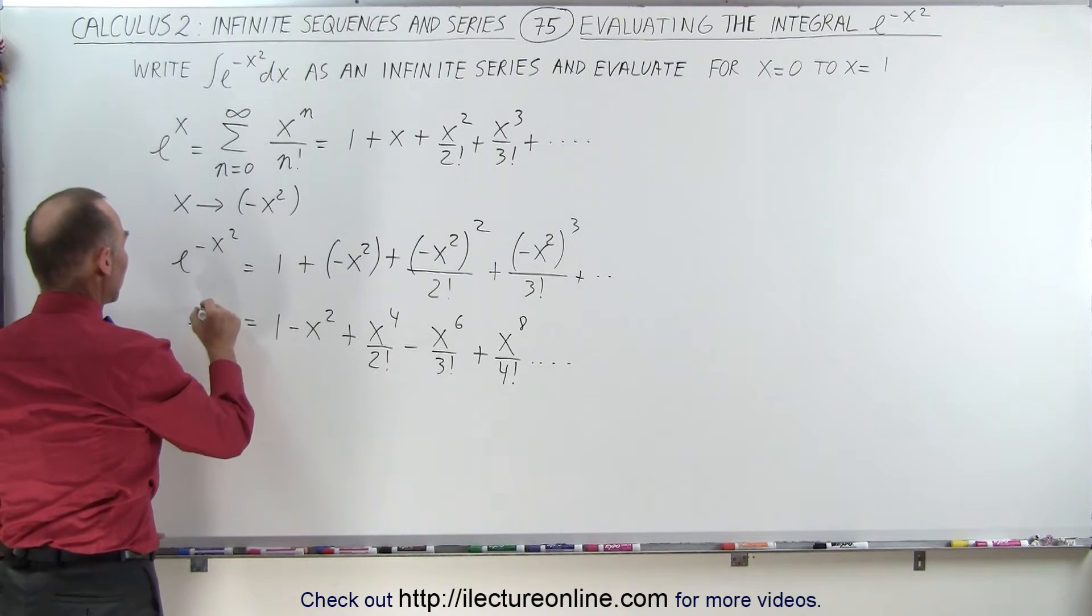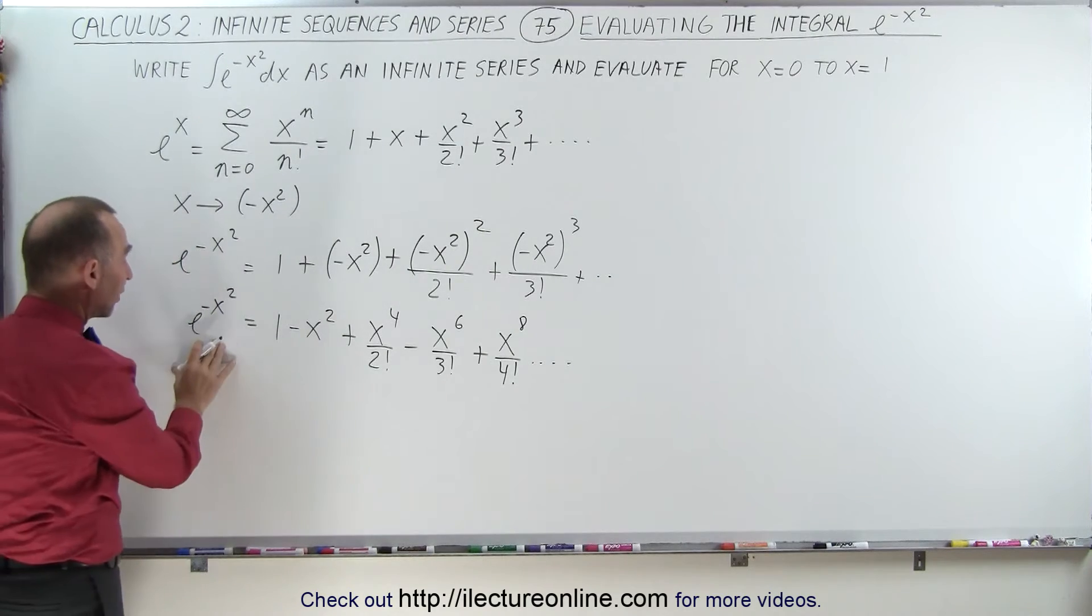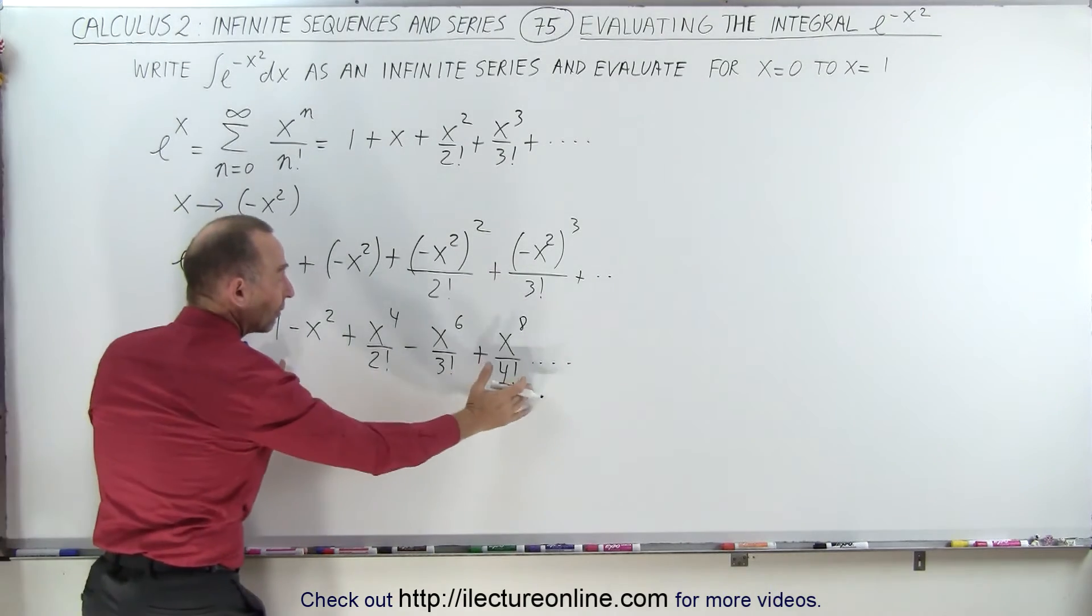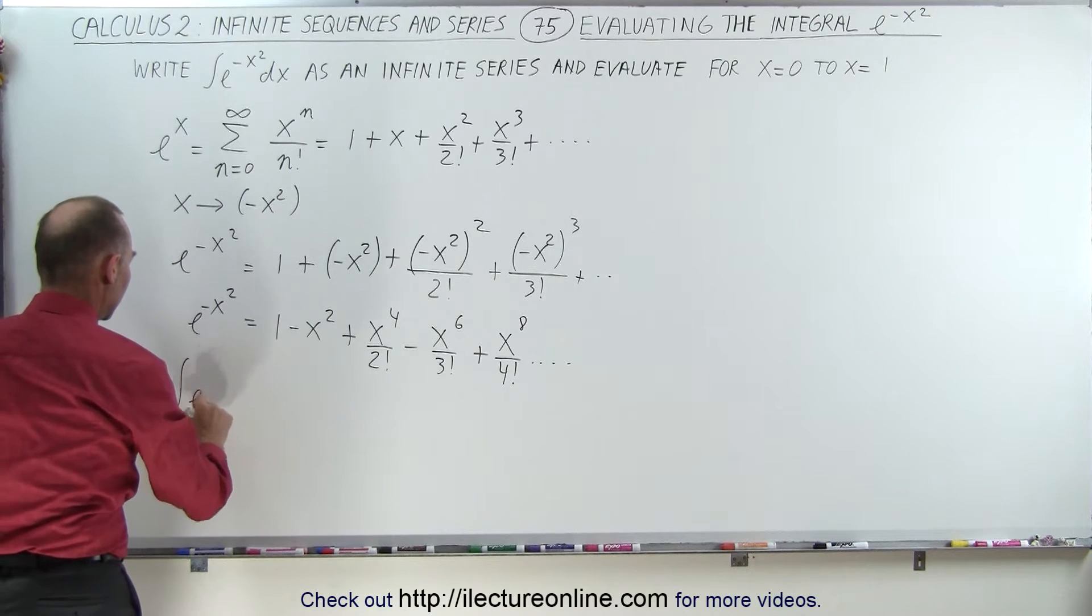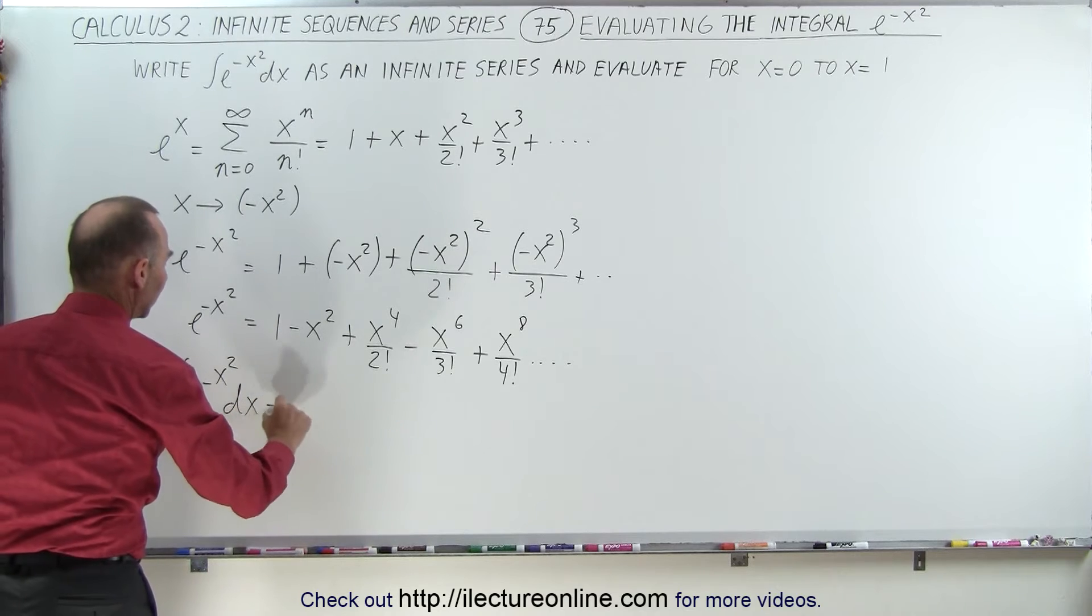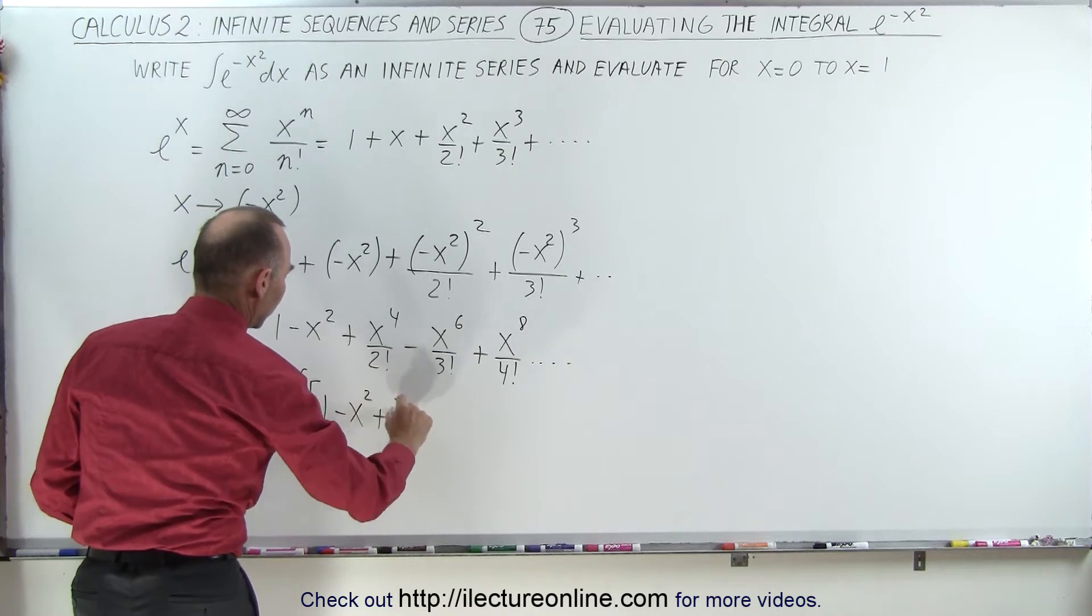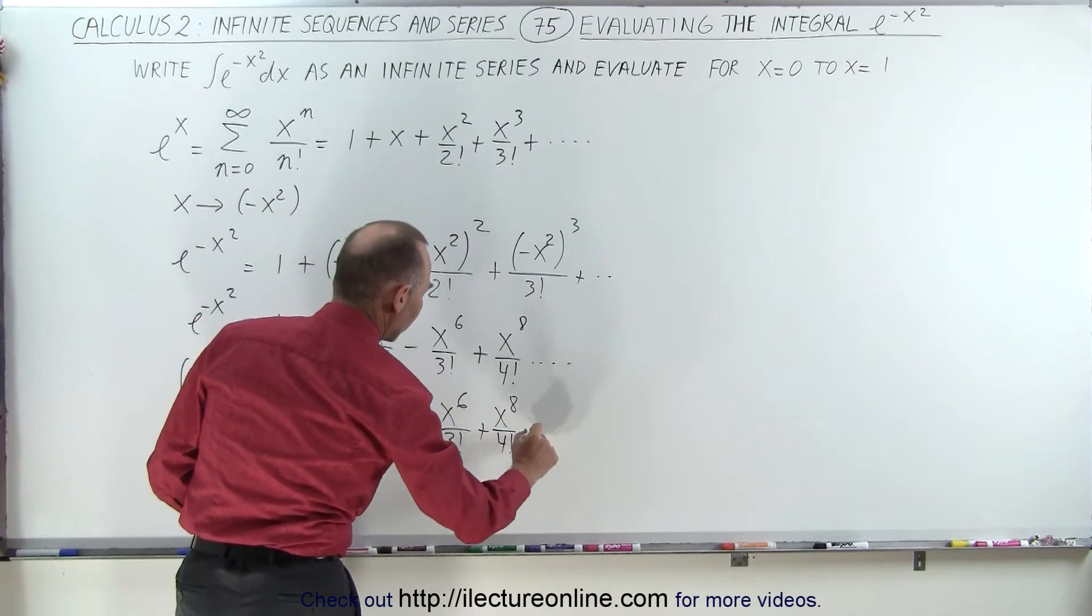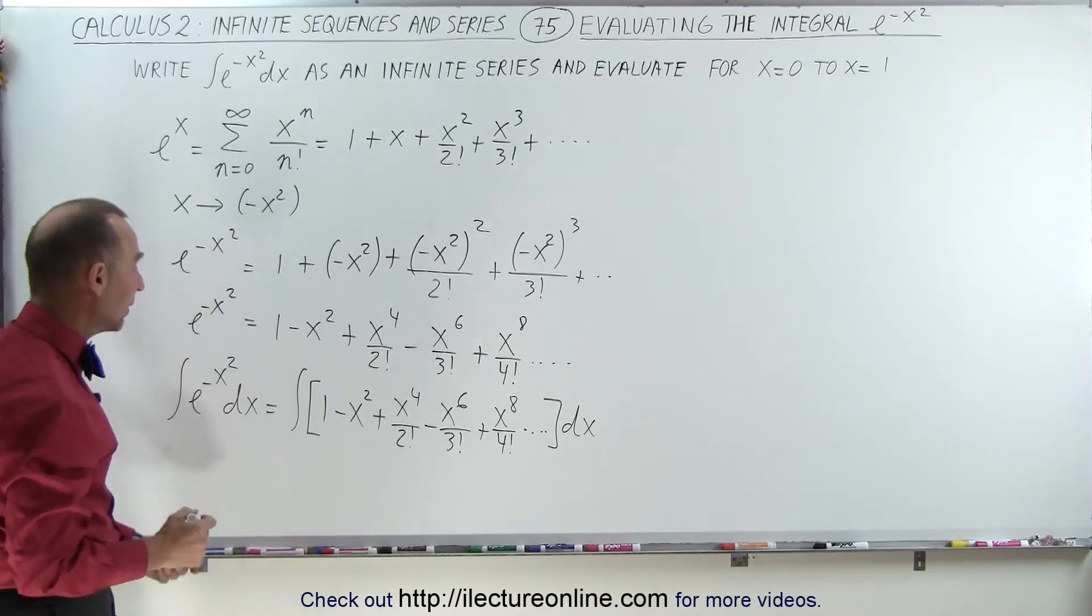So, if this is equal to e to the minus x squared, then if we want to integrate e to the minus x squared, that's the same as integrating this infinite sum, and so that means that the integral of e to the minus x squared dx is equal to the integral of, and we have 1 minus x squared dx. So, let's go ahead and integrate that and see what we end up with.